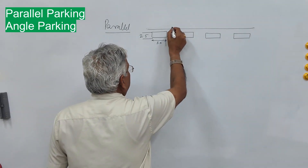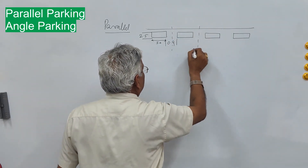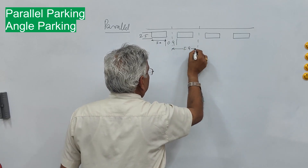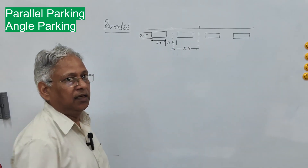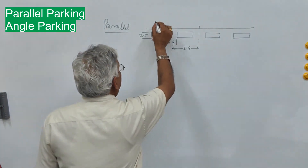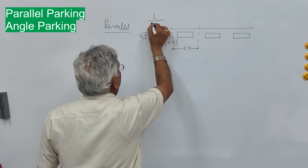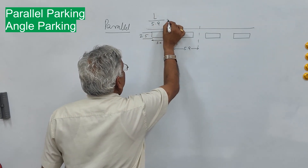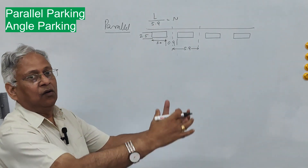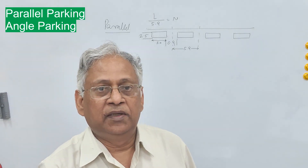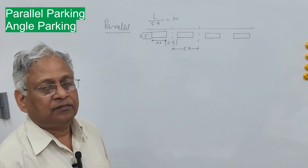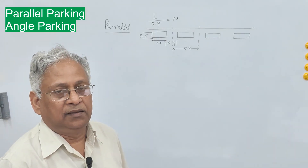The space required for parking a vehicle, or the length required along the curb line for parking a car, is 5.9 meter. Therefore, the number of cars that can be parked in a length L along the traffic movement is L divided by 5.9. This is parallel parking.